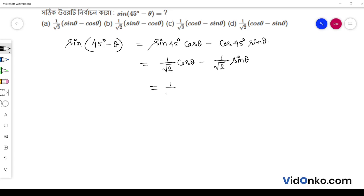This equals, factoring out 1/√2, we get 1/√2 (cos θ - sin θ).